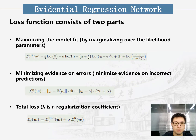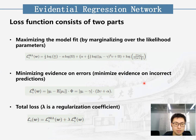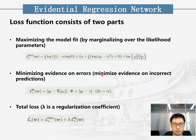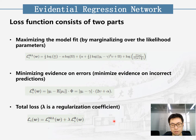I will now introduce the loss function of evidential deep learning. The loss function consists of two parts. The first is maximizing the model fit; in order to maximize model fit, we minimize the negative logarithm of the marginal likelihood loss. The second part is minimizing the evidence on errors. Evidential deep learning also proposes a method to regularize training by applying an incorrect evidence penalty for higher uncertainty predictions, in order to minimize the evidence on incorrect predictions. The total loss function combines these two parts, and lambda is the regularization coefficient.